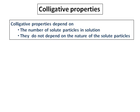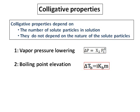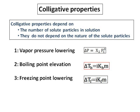There are four colligative properties. The first one is vapor pressure lowering. The second is boiling point elevation, defined as ΔTb = iKbm. The third is freezing point lowering or freezing point depression, defined as ΔTf = iKfm.